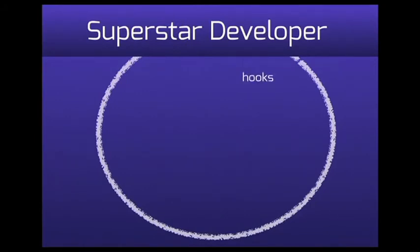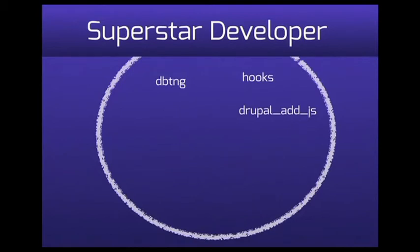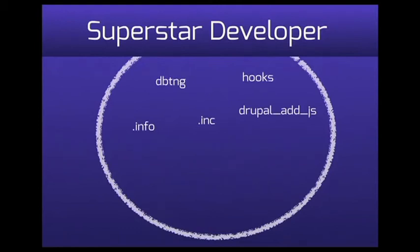Superstar developer: they know hooks, they know drupal.api.drupal.org exists, they know the database abstraction layer. They know Drupal.add.js and where to use it — it compresses your JS into one file so when performance is turned on, all your JavaScript is in one file and your site loads quickly. They know .inc files exist for includes, not .inc.php, though that's changing in Drupal 8. They know the .info file stores all module information, and that .info and .module are the minimum needed for Drupal to recognize a module.